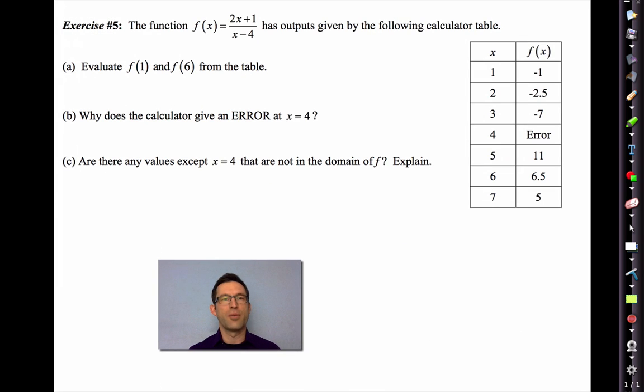Let's take a look at one with a table. The function f(x) equals 2x plus 1 divided by x minus 4 has outputs given by the following calculator table. Letter A says evaluate f(1) and f(6) from the table. I love tables for evaluating functions. Here's my input, and my output is negative 1. When my input is 6, my output is 6.5.